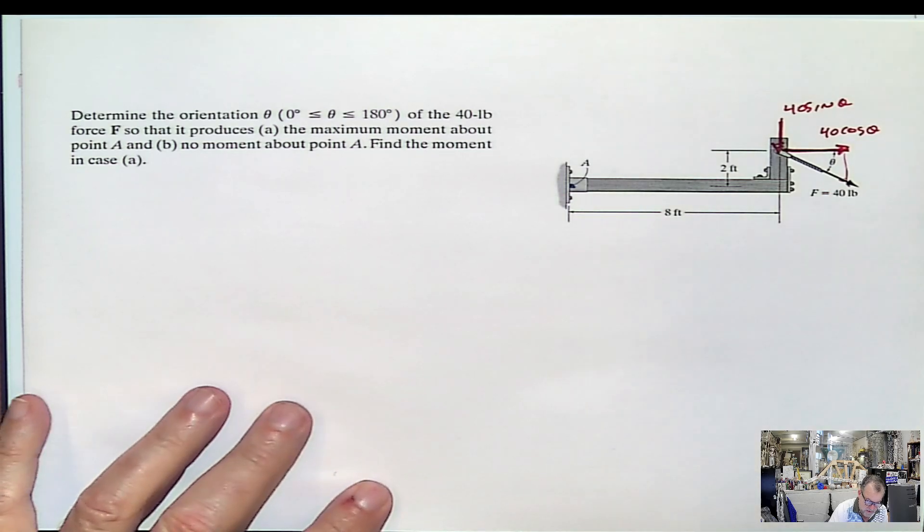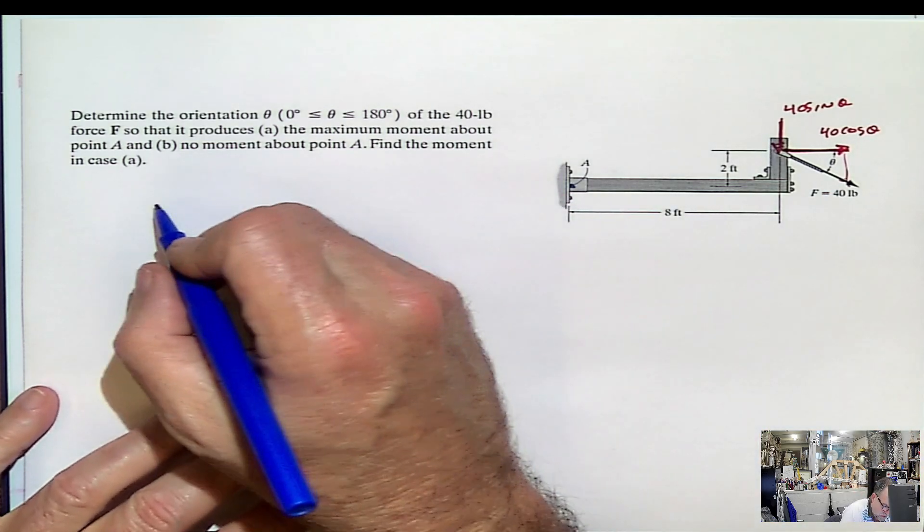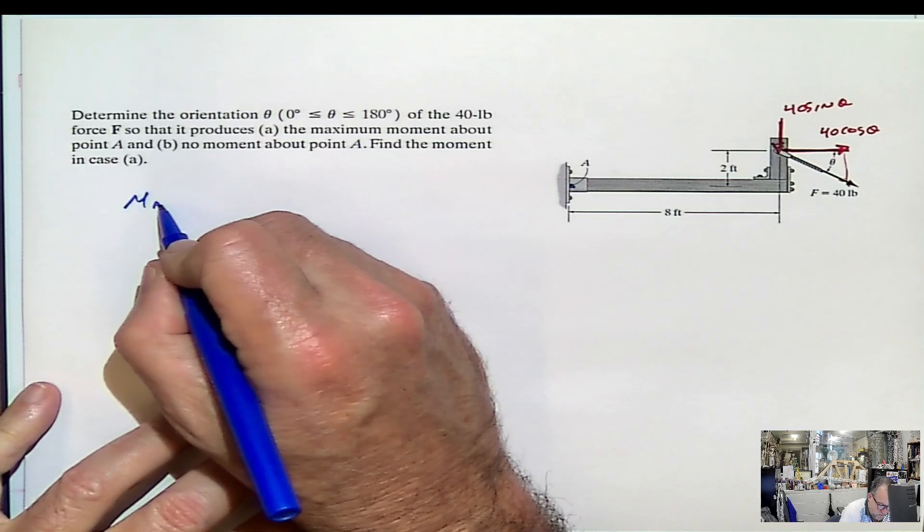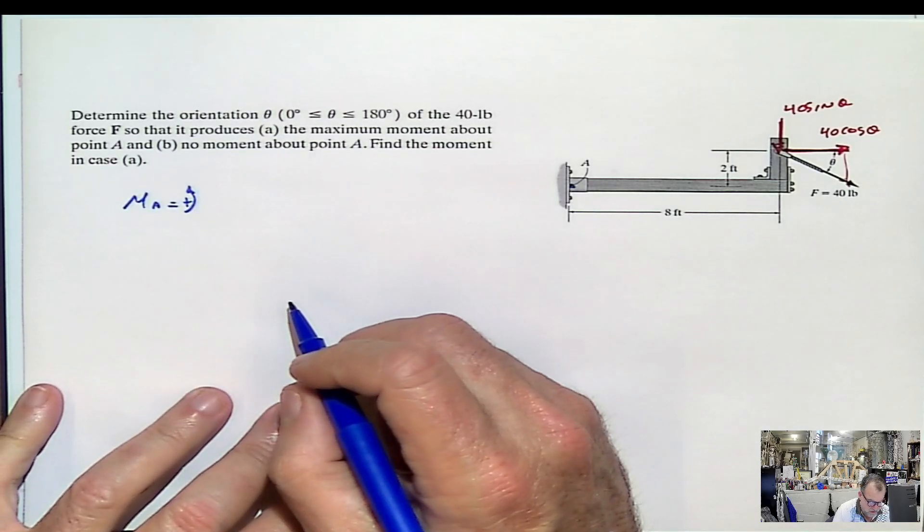And this will be 40 sine of the angle. And the rest is just applying the equation. So we're going to calculate the moment with respect to the point at A, and I'm going to assume counterclockwise as positive.